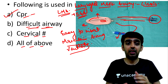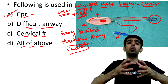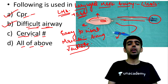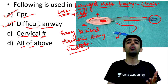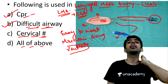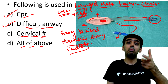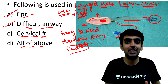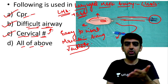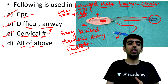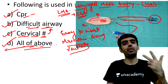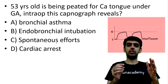For cervical spine fractures, the LMA is preferred because intubation requires maneuvering the cervical spine — extension at the atlanto-occipital joint and flexion at the lower cervical joints — which can be avoided with the LMA. Cervical fracture is itself a difficult airway scenario. Therefore the correct answer is D — all of the above: CPR, difficult airway, and cervical spine fractures.